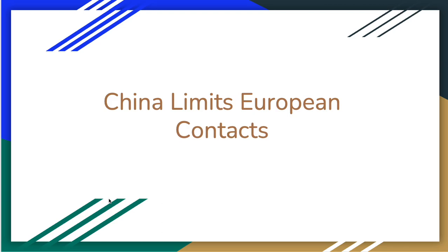We're going to discuss the lesson 'China Limits European Contacts.' This was the title in the previous book. The reason I kept it is that I have a point of view to share. The new title in the new book, covering almost the same information, is 'China Rejects Expansion.' This shows how the same movement can be seen as expansion by one group and as interference by another.